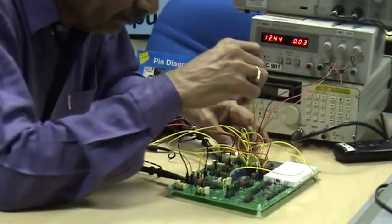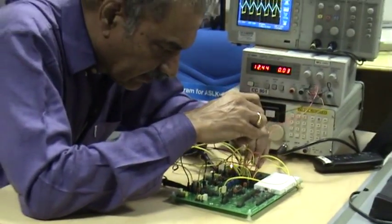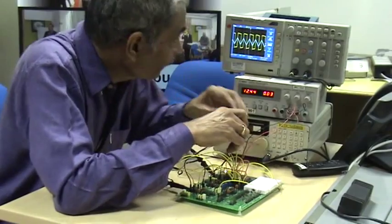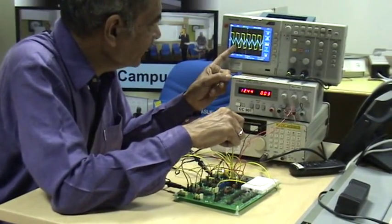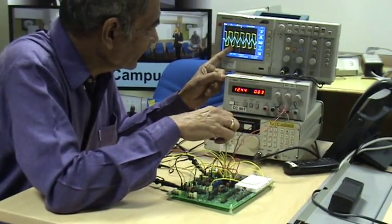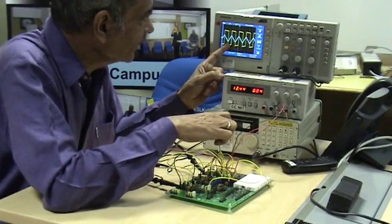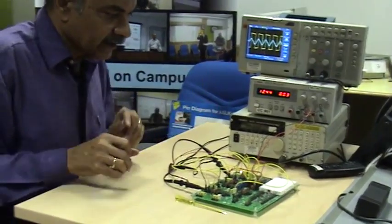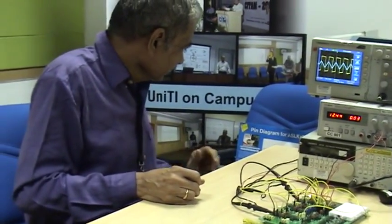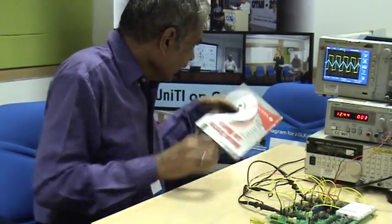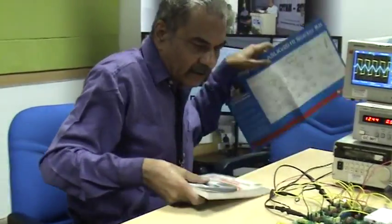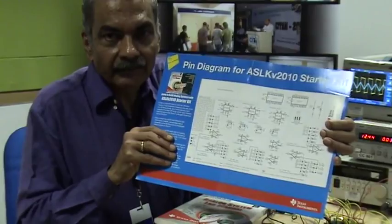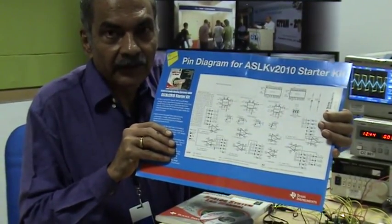Using the potentiometer I can vary the control voltage, and you can see on the oscilloscope that as I increase the control voltage the frequency is increasing, and as I decrease the control voltage the frequency is proportionately decreasing. This is an easy experiment that you can try. The entire circuit can be built using this pin diagram, which is downloadable from the website.